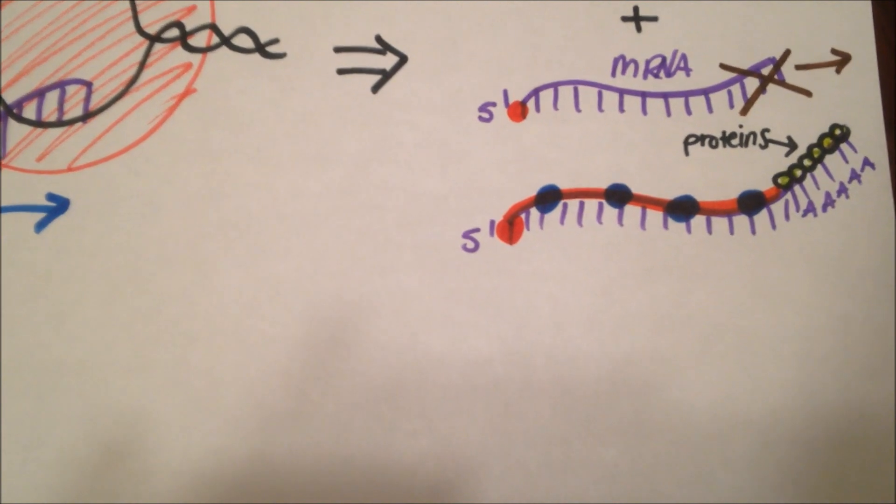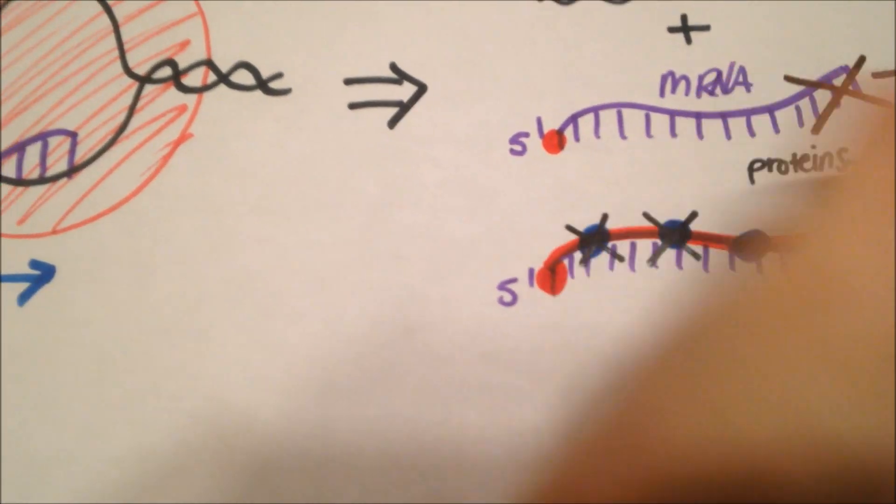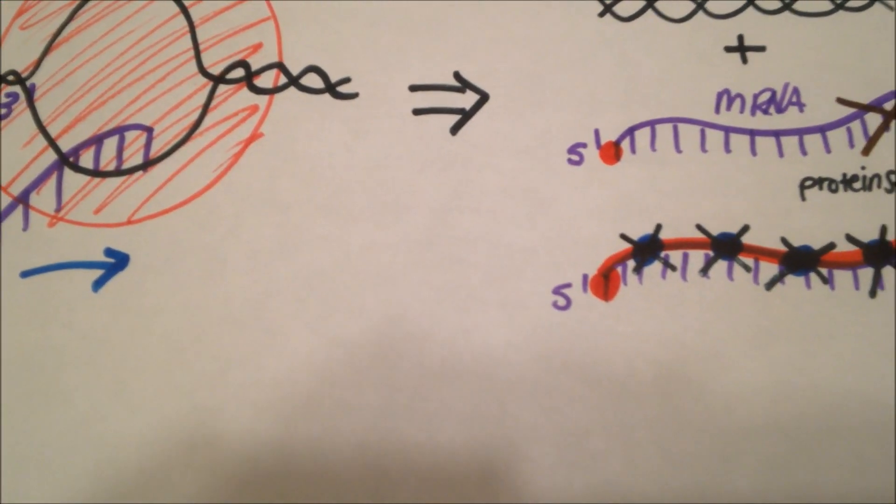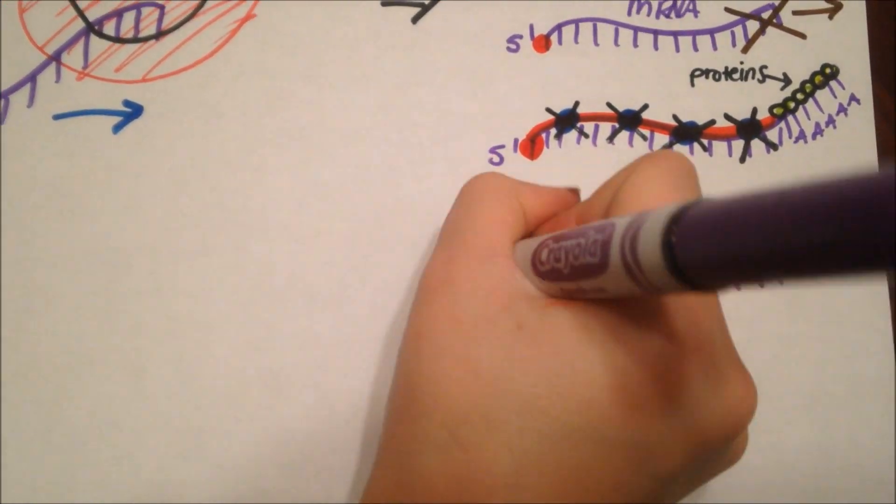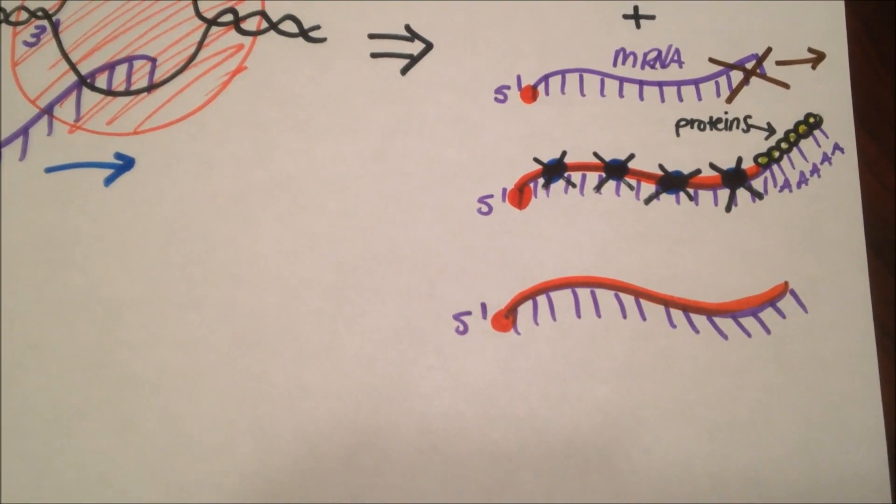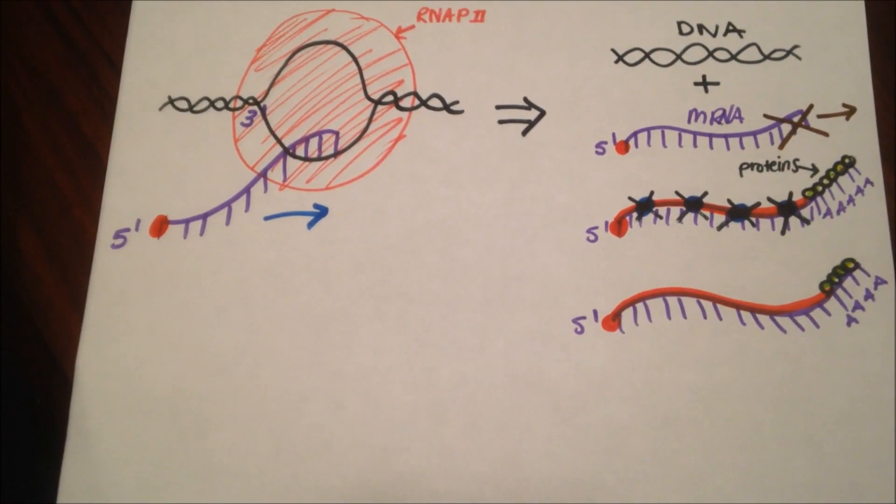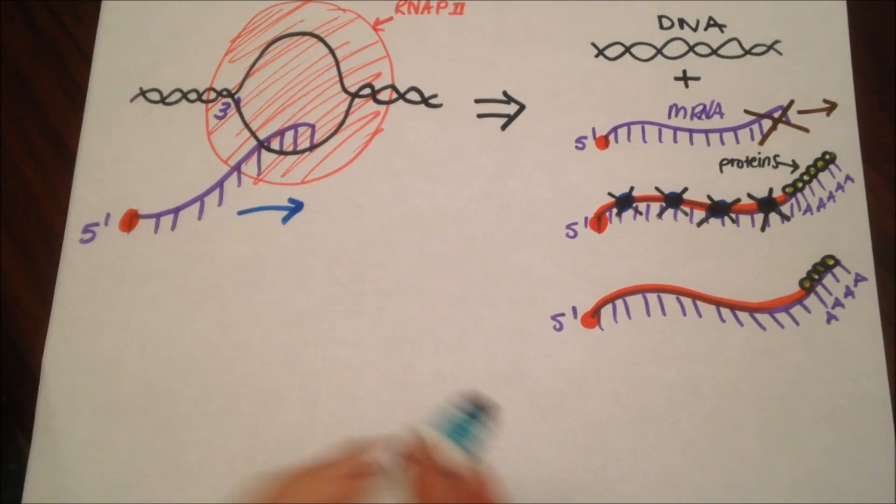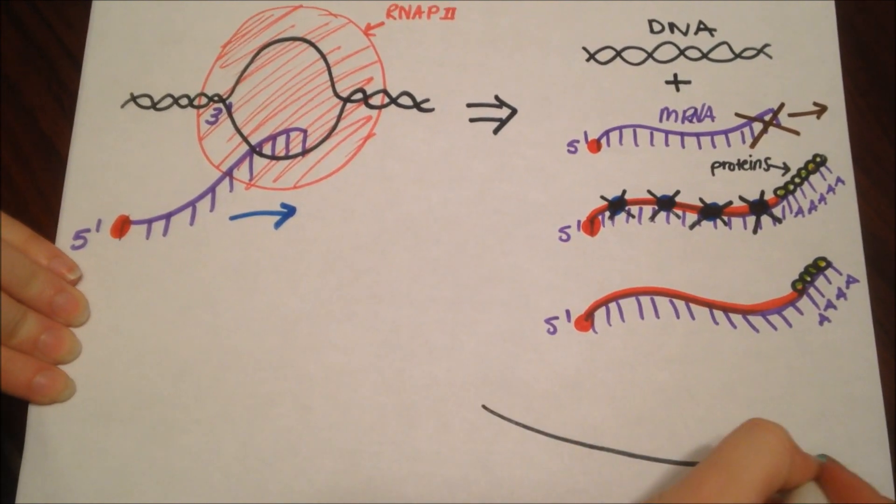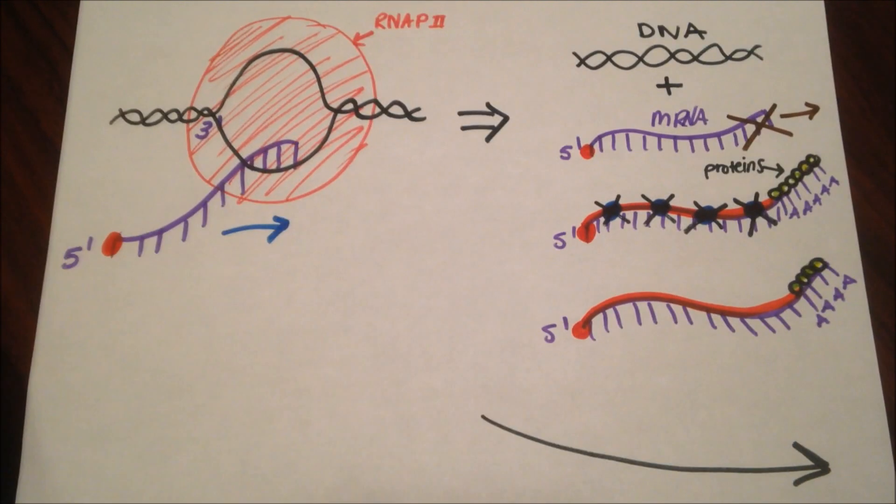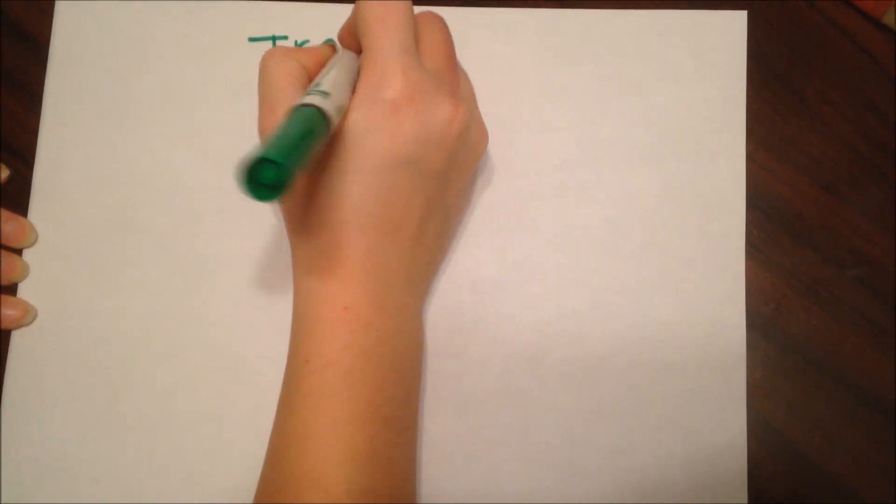So, in comes the spliceosomes, which cut an intron, and then loop the mRNA, cut it, and then the exons get stitched back together. And now you have a mature mRNA strand, ready to move out of the nucleus through the nuclear membrane, or nuclear pores. Now that the mRNA has moved to the cytoplasm, the next step can begin.